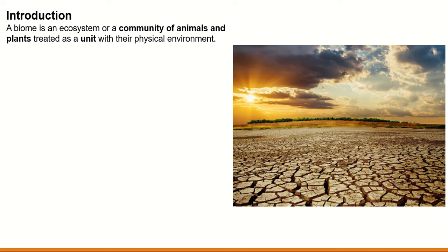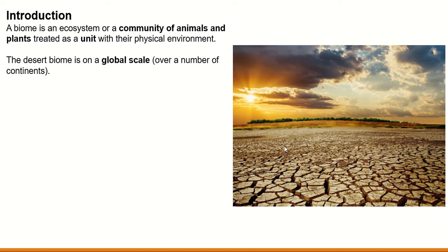So a biome is an ecosystem or community of plants and animals treated as a unit with their physical environment. You can see the desert biome here — it's a very harsh environment, so there are very few plants and animals living here, but those that do live here have adapted to this environment. The desert biome is on a global scale, so the desert biome can be found all over the world — there are particular parts, but you can find deserts in America, Australia, Africa, and South America.